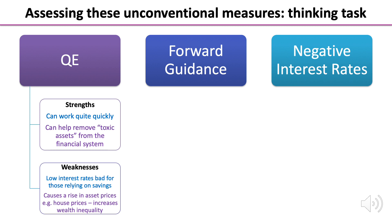Some of the downsides of QE effectively involve low interest rates. Low interest rates are bad for those that rely on savings. Furthermore, QE causes a rise in asset prices. One of the assets known to rise in price as a result of QE is house prices. When house prices increase, this increases wealth inequality. Added to wealth inequality is also the issue of intergenerational inequality — when the elderly benefit more likely at the expense of those who are younger. If you're young you're probably unlikely to be on the housing market, whereas the elderly will probably already have a house, and as that asset increases in price, they gain.